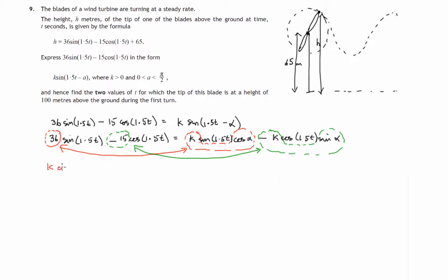The first one is that k cos alpha is equal to 36, and also k sin alpha equals 15. There's two simultaneous equations to solve. The method we use to get rid of k is to divide the sine equation by the cosine equation. So k sin alpha by k cos alpha equals 15 divided by 36. The k's cancel and sin over cos gives us tan, so tan alpha equals 15 over 36.